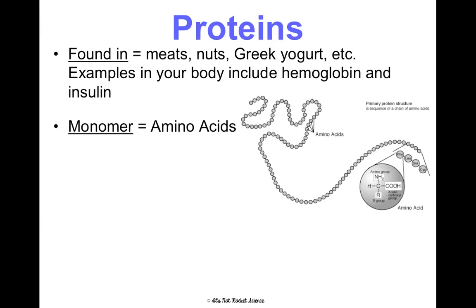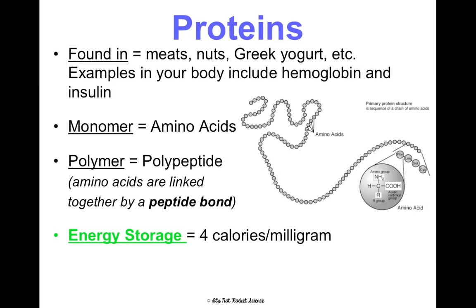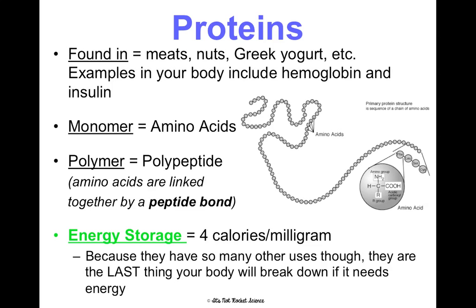The monomer of proteins is amino acids. The polymer is called a polypeptide, because these amino acids get held together by peptide bonds. When a bunch of them are bonded together, we call it a polypeptide, and we'll learn how to synthesize proteins later in our genetics unit. The energy storage is like a carb — four calories of energy per milligram — but this is your body's last resort. Your body does not want to break down proteins for energy because there are so many other important things they're used for. Your body would rather break down carbs and lipids for energy first.